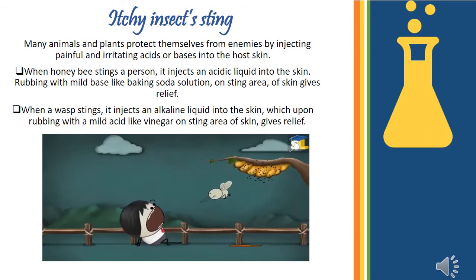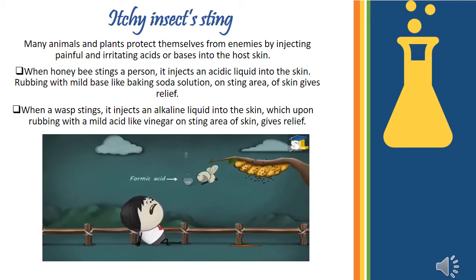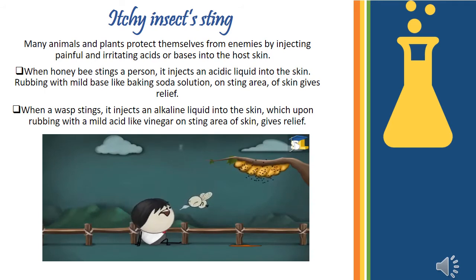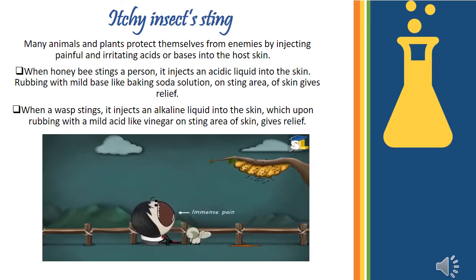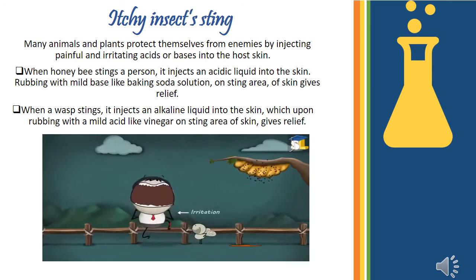Many animals and plants protect themselves by injecting painful and irritating acids or bases into the skin. When a honeybee stings a person, it injects an acidic liquid into the skin. Rubbing a mild paste-like baking soda solution on the sting area gives relief.